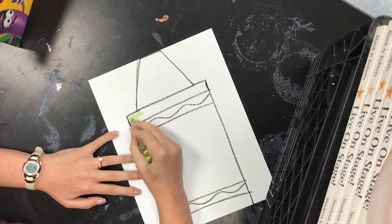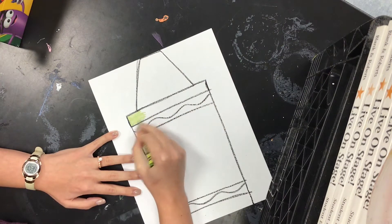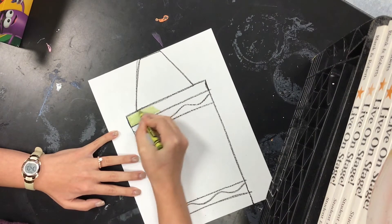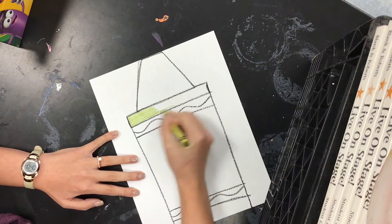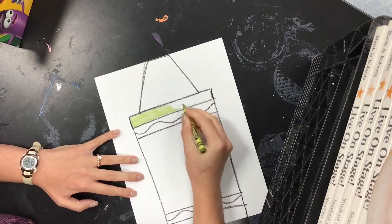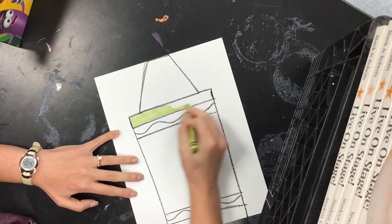So we're coloring nice and small, not really big. This is what I call controlled scribbling. It helps us stay nice and neat when we color, and it makes our art look like it was done by an artist, which is what we are. We are all artists.